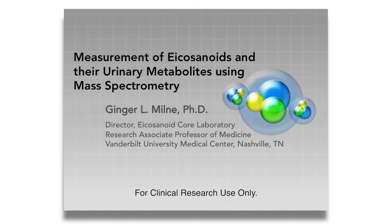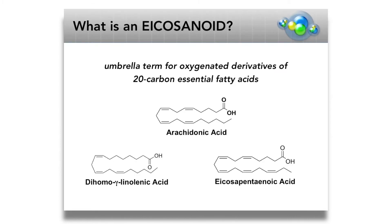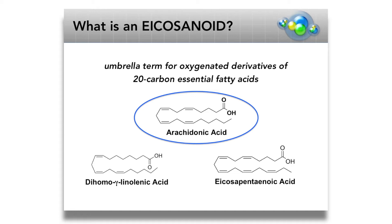Hello! Today I will be discussing the measurement of eicosanoids and their urinary metabolites using mass spectrometry. First, what is an eicosanoid? Eicosanoid is an umbrella term used to describe any oxygenated derivative of a 20-carbon essential fatty acid. A few examples of 20-carbon essential polyunsaturated fatty acids are shown here on this slide. For the purpose of today's talk, we'll be focusing on arachidonic acid depicted here in the middle. This has 20 carbons and 4 carbon-carbon double bonds.